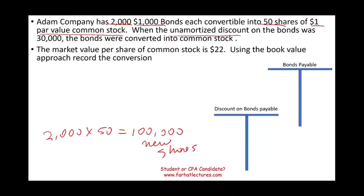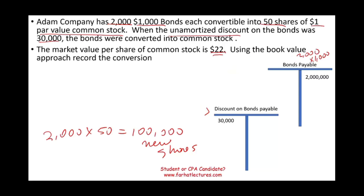When the unamortized discount was $30,000, the bonds were converted into common stock. My bonds payable is $2 million — that's the number of bonds times the face value of $1,000. I also have a related discount on bonds of $30,000. The market value per common stock was $22,000 at the time of the conversion, but we use the book value to record this conversion. Book value means I'm not going to record any gain or loss — all I'm doing is removing my bonds and replacing them with stocks.